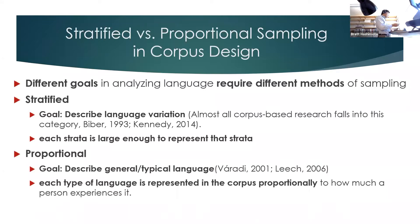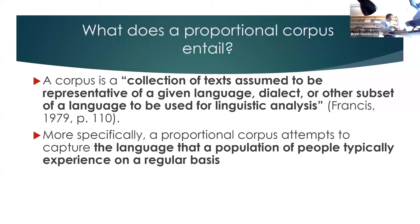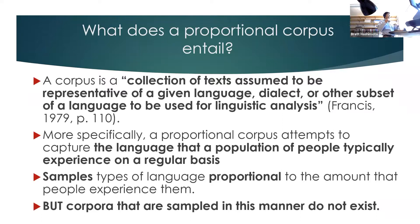When I talk about a proportional corpus, what I mean is a corpus — a collection of texts designed to be representative of a variety of language. More specifically, a proportional corpus attempts to describe the language that we typically experience on a regular basis, sampling language proportional to the amount that people experience that type of language. This type of corpus has been theorized and discussed, but corpora sampled in this manner have not existed up to this point.